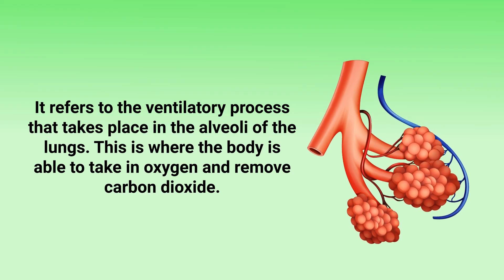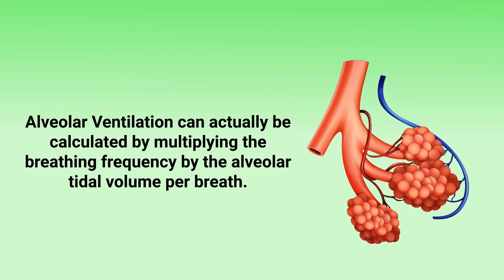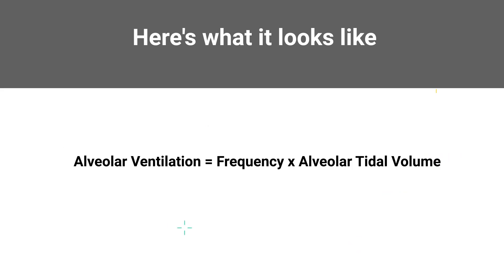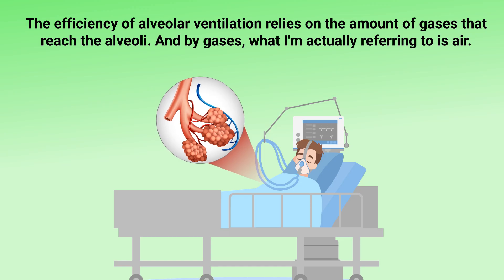Alveolar ventilation refers to the ventilatory process that takes place in the alveoli of the lungs. This is where the body is able to take in oxygen and remove carbon dioxide. Alveolar ventilation can be calculated by multiplying the breathing frequency by the alveolar tidal volume per breath. The formula is: alveolar ventilation equals frequency multiplied by alveolar tidal volume.